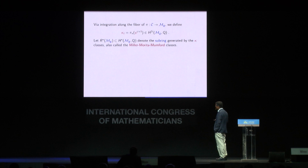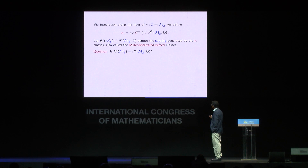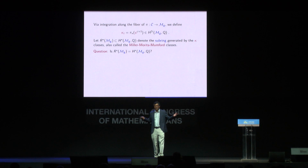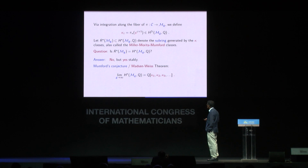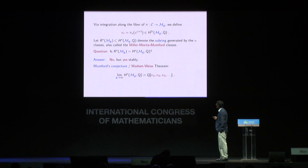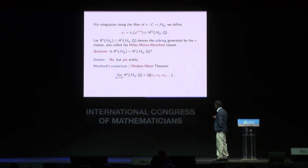We use this class Ψ — the first Chern class of the tautological cotangent line bundle on the universal curve — to produce many classes on the moduli space. This first Chern class is Poincaré dual to the cycle defined by zeros and poles of a meromorphic section of the line bundle, making it the most concrete Chern class. By pushing forward the (i+1)-th power of this class along the fiber, we define the class κ_i. These are the Miller-Morita-Mumford classes, and they give us many classes inside the moduli space, completely analogous to the Chern classes in the Grassmannian case.